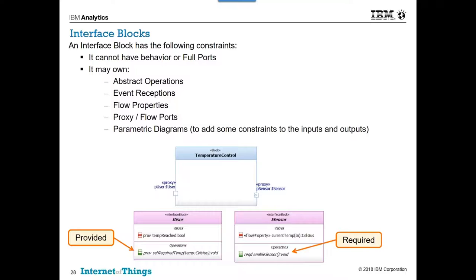An interface block can contain abstract operations, event receptions, flow properties, additional proxy ports, and parametric diagrams — you can add constraints to inputs using parametric diagrams. You can specify things in terms of direction: provided and required are common, and in and out are also shown. You can specify direction if you need to.